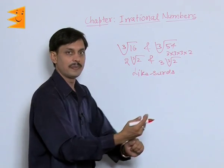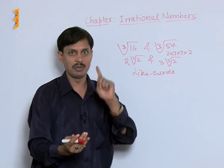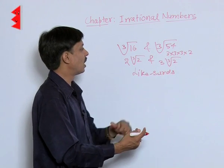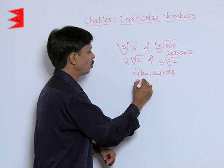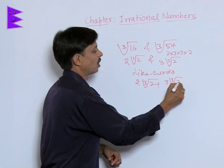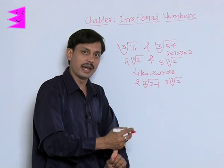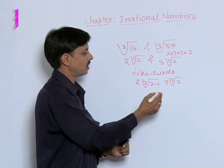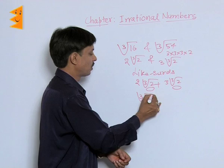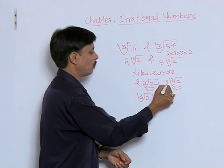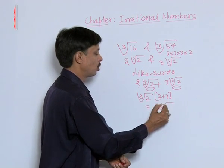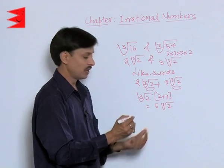Since these are like surds, they can be added, multiplied, and divided. To add 2∛2 + 3∛2, whenever you want to add like surds, take the irrational part as common. So ∛2 is common, and we are left with 2 + 3, giving the answer 5∛2. That is the addition.